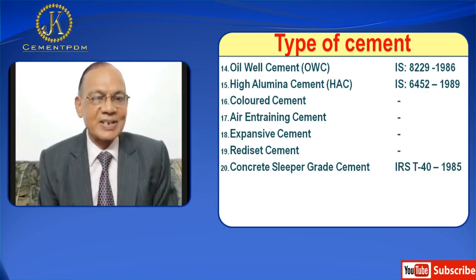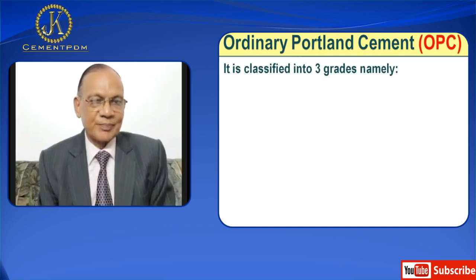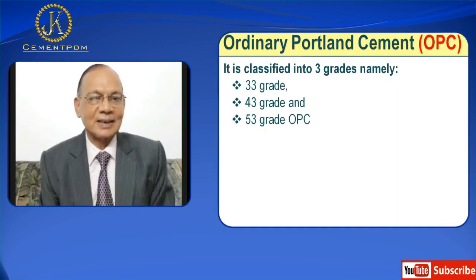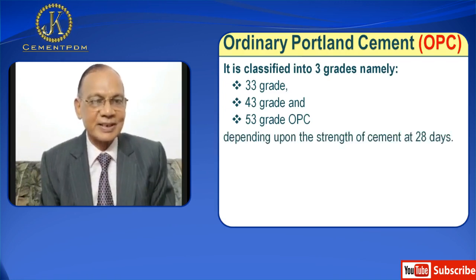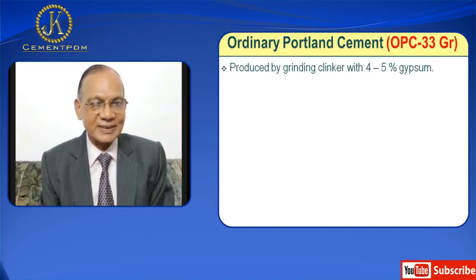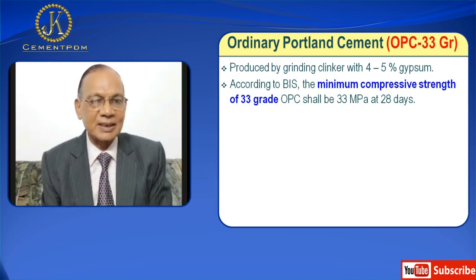Now each type of cement will be discussed in detail. Let us first discuss Ordinary Portland Cement, OPC. OPC is classified into three grades: 33 grade, 43 grade, and 53 grade OPC, depending upon the strength of cement at 28 days. OPC 33 grade is produced by grinding clinker with 4–5% gypsum. According to BIS, the minimum compressive strength of 33 grade OPC shall be 33 MPa at 28 days.